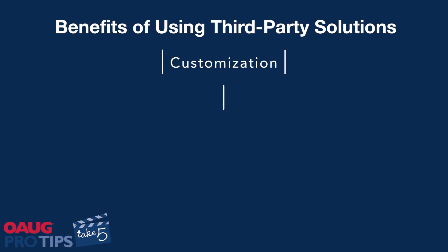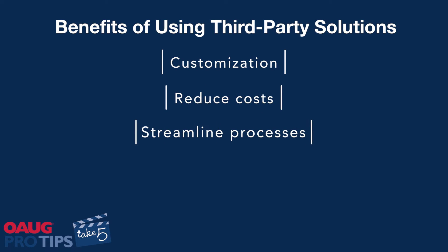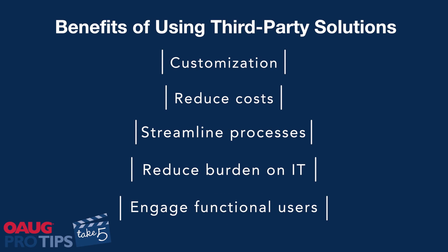The benefits of using a third-party solution are that you can customize and streamline your processes, reduce costs, and put more responsibility on functional users versus your IT group. In our company, we only have a very limited group of IT professionals, whereas we have hundreds of functional users — and it allows them to get more involved and engaged. With cost savings, you'll also reduce the hours needed to upload, download, and manage big data or conversions. We've saved thousands of hours by using these tools, making it much easier to improve our business going forward.